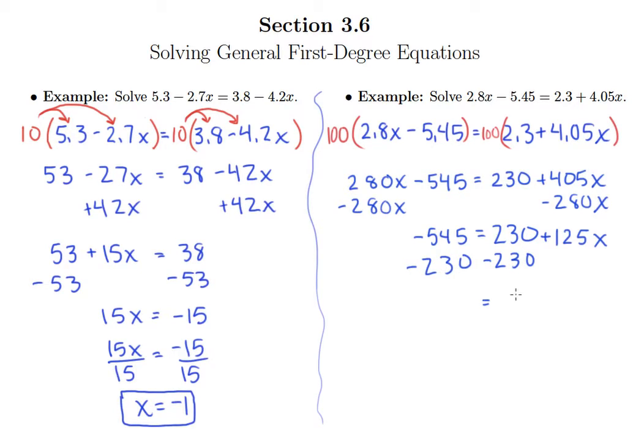And so what we get here is 125x on the right, and on the left here we have 775, but a negative 775, and so then we'll go ahead and divide both sides by 125.